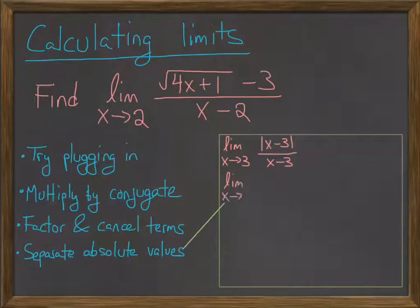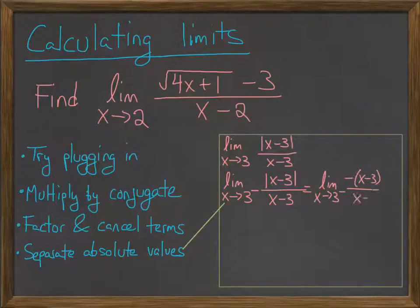So limit as x goes to 3 from the left of that problem. If x is slightly less than 3, so for example, if x was 2, the thing inside the absolute value is negative, so when you write it again without the absolute value, you stick a negative sign in there. Then the x minus 3 terms cancel, and you just get negative 1.